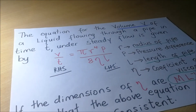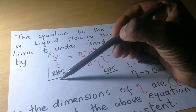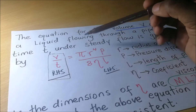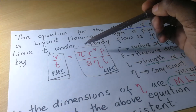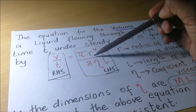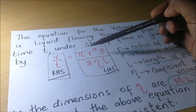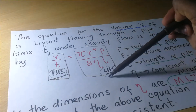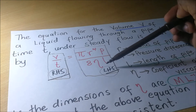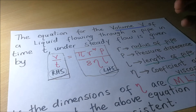For us to be able to show that an equation is dimensionally consistent, the procedure is going to be this: we are going to find the dimensions of the right-hand side, then we're also going to find the dimensions of the left-hand side. If the two answers we get are the same, then we shall conclude by saying that since the dimensions on the right-hand side are equal to the dimensions on the left-hand side, therefore this equation is dimensionally consistent.